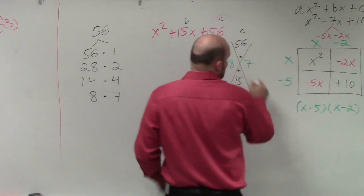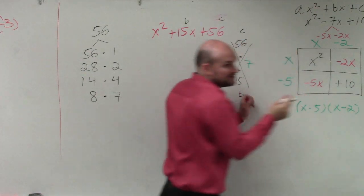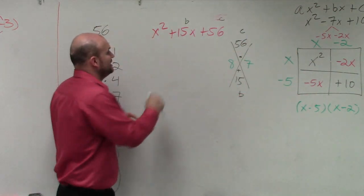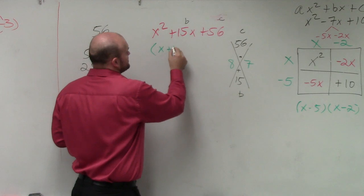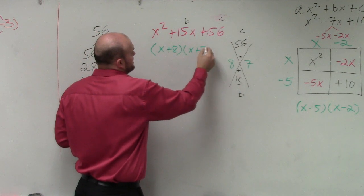Now, these numbers are the same as the factors in the problems we're going to be doing today. So your factored form would be x plus 8 times x plus 7.